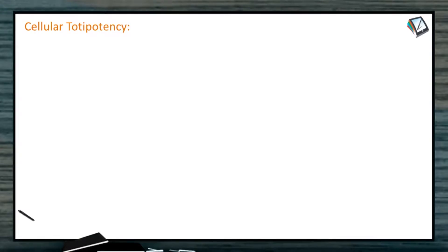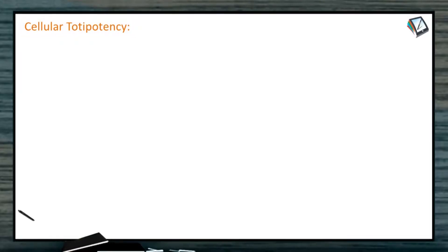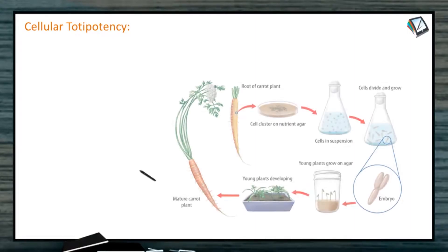Now we were talking about cellular totipotency. This is an interesting thing — how we get cellular totipotency. Each cell has a capacity to regenerate into the entire plant. For example, the root of a carrot plant. Carrot is a modified root.